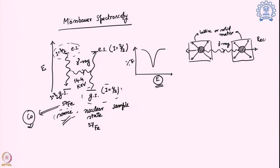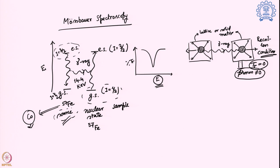This is known as the recoilless condition, where translational recoil is made almost zero. However, vibrational energy — phonons — can still be non-zero, which is why temperature has an effect on how the Mössbauer spectrum looks. The sample is kept static, while the source is placed on a dynamic system — a wheel — that can be moved towards or away from the sample.